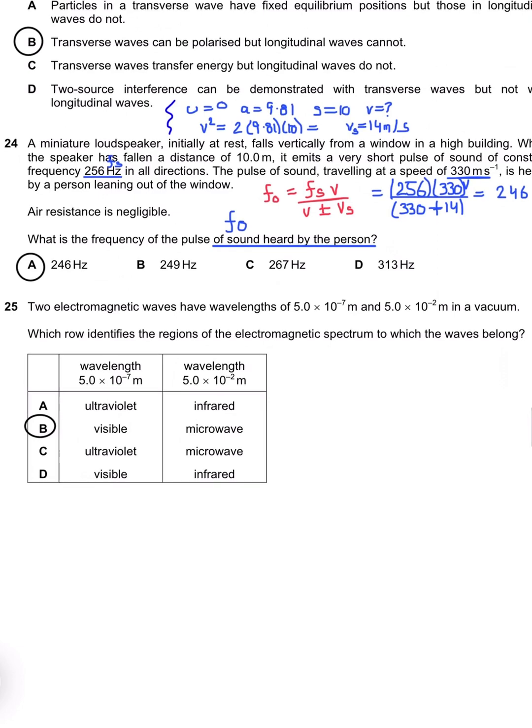Question 25: Two electromagnetic waves have wavelengths. That's a recall question, and the answer is B. Thanks for watching.